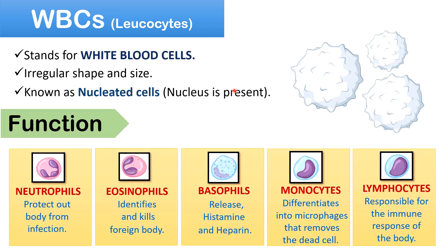Depending upon their physical and functional properties, WBCs are categorized into five types: neutrophils, eosinophils, basophils, monocytes, and lymphocytes. Neutrophils have a segmented nucleus and contain light pink colored granules in the cytoplasm; they play a crucial role in phagocytosing bacteria and promoting inflammation. Eosinophils have a bilobed nucleus and contain dark pink or red colored granules in the cytoplasm; these are active against parasites and helminths.